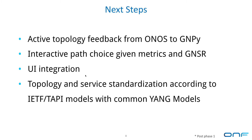The next steps for the demo are to have an active feedback of the topology from ONOS to GMPY. At the moment the topology is pre-provisioned to both ONOS and GMPY at separate stages, while we envision a feedback loop from ONOS to GMPY about the topology too. We also want a more interactive path choice between ONOS and GMPY — currently ONOS picks simply the best path according to the highest GSNR level, but instead we could have more interactive control over the path decision according to operator margins and path links themselves. Additionally, we want better UI integration — at the moment this is done through a command line interface — and also topology and service standardization of the YANG models for communication between GMPY and ONOS according to IETF or TAPI common YANG models.